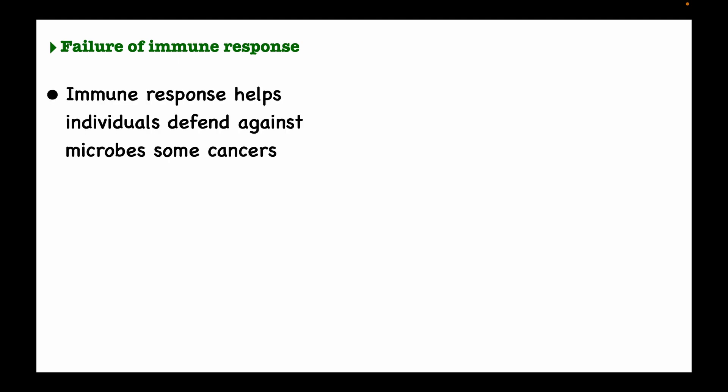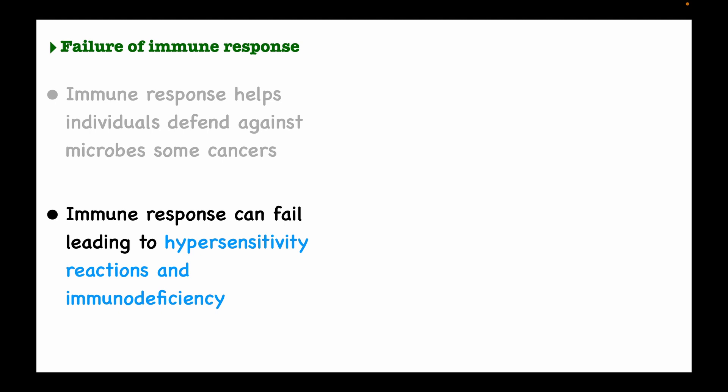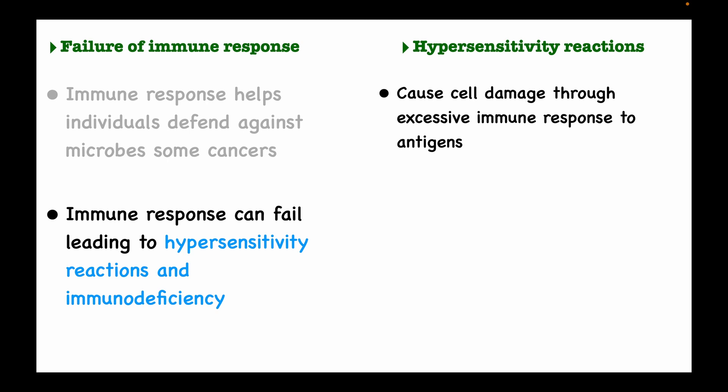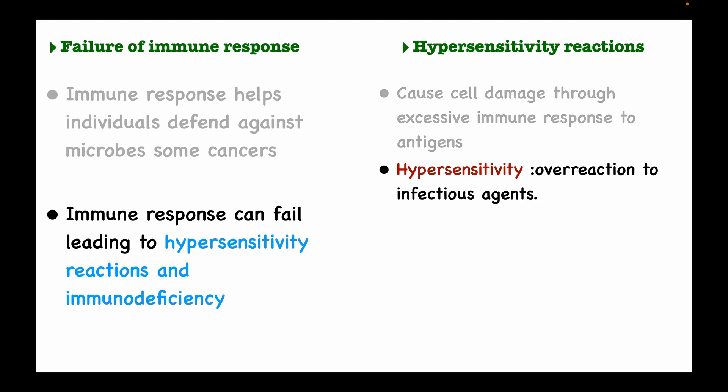The immune response is supposed to defend us against microbes and some cancers, but sometimes the immune system may fail. When this happens, two main phenomena occur: hypersensitivity reactions and immunodeficiency. Hypersensitivity reaction is when the immune system responds excessively to an antigen, causing destruction or damage of cells and tissues — essentially an overreaction of the body to an infectious agent. There are four main types of hypersensitivity reactions, types 1 through 4.